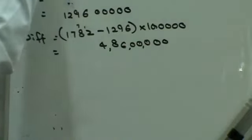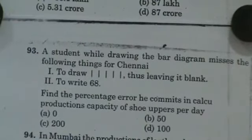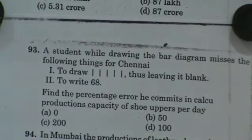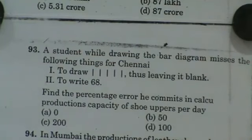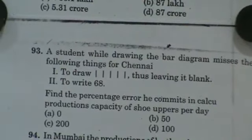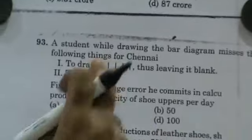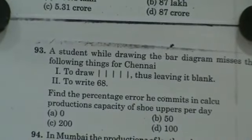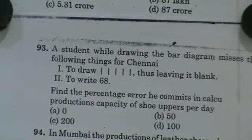This was the 92nd question. Then answer 93. A student while drawing the bar diagram misses following things for Chennai: to draw this symbol, thus leaving it blank. To write 68. Find the percentage error he commits in calculating production capacity of shoes upper per day. Instead of this, he leaves it blank. Now, this particular symbol stands for shoes. That means he has made an error in the drawing of diagram of shoes.